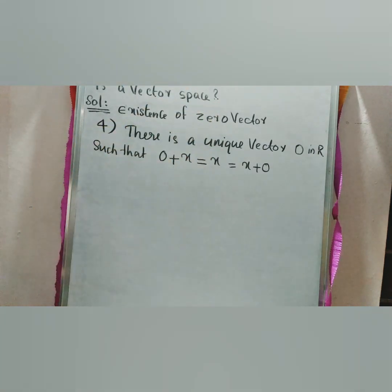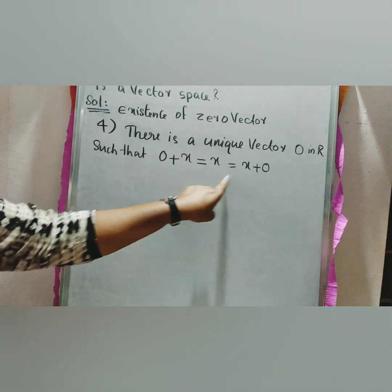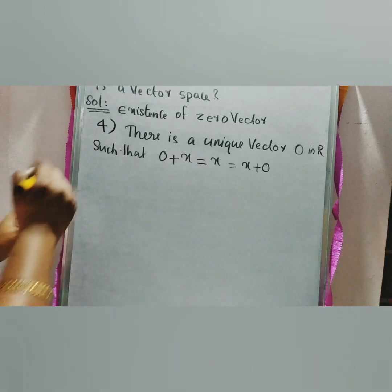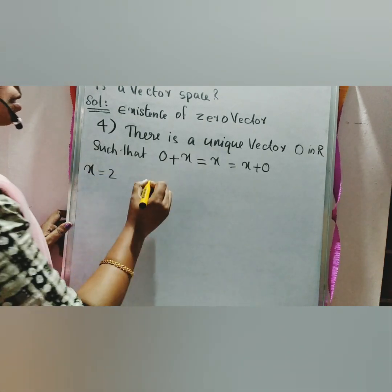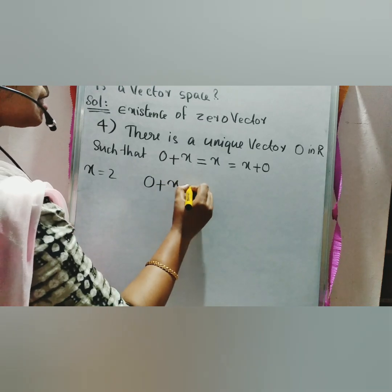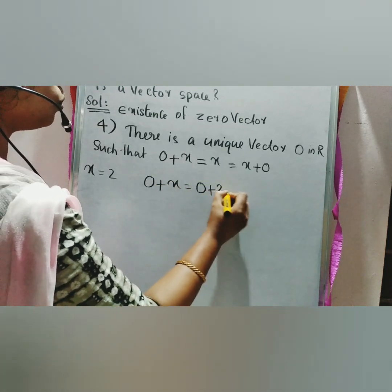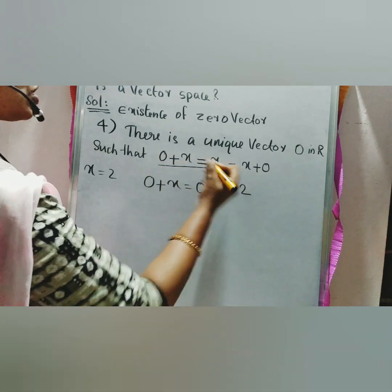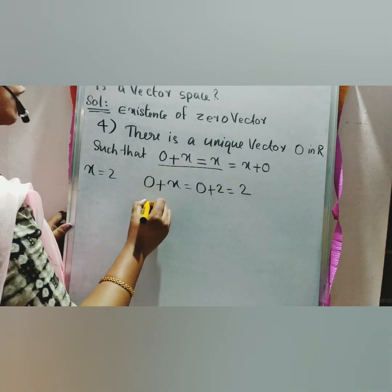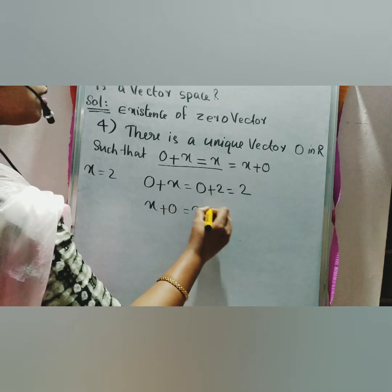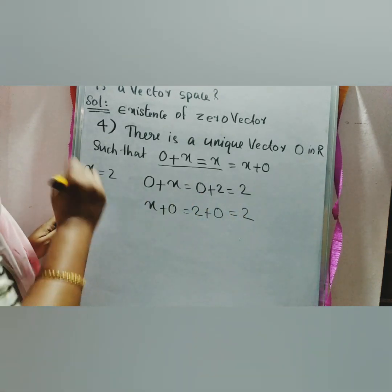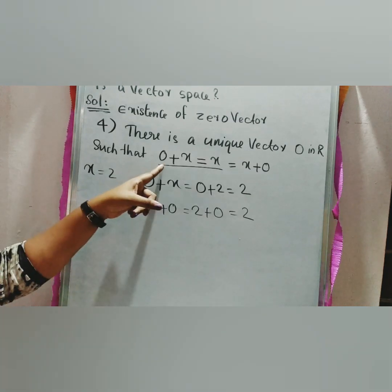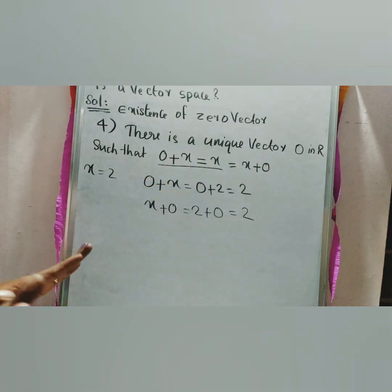Fourth property — existence of zero vector: there is a unique vector 0 in R such that 0 plus x equals x plus 0 equals x. For example, if x equals 2, then 0 plus 2 equals 2 and 2 plus 0 equals 2. Any element in R satisfies this property, so the fourth property is satisfied.